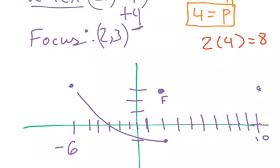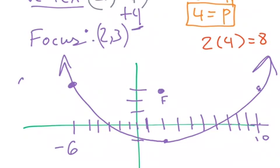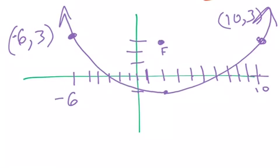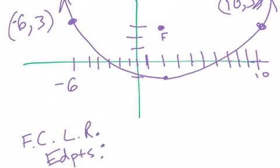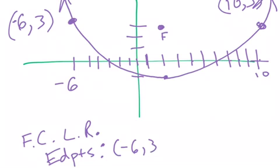So our parabola opens like such. So we know that our endpoints are going to be at negative 6, 3, and the other endpoints are going to be at 10, 3. So I'll go ahead and write F, C for focal chord, L, R for what it's called, which is the latus rectum, endpoints, which are going to be negative 6, 3, and 10, 3.